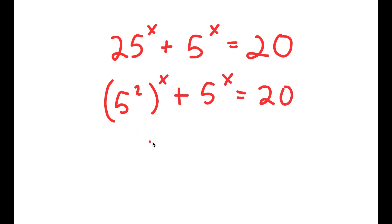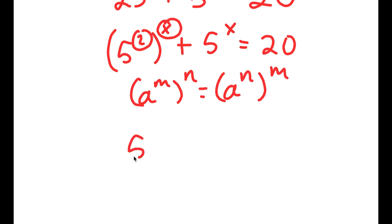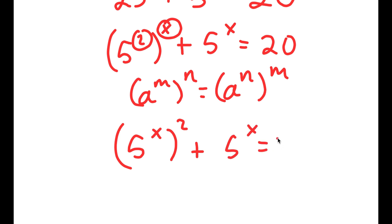Now, if I have something in the form a to the power of m to the power of n, this is the same thing as a to the power of n to the power of m — meaning I can switch these two exponents. So this is the same thing as 5 to the power of x to the power of 2, plus 5 to the power of x, is equal to 20.